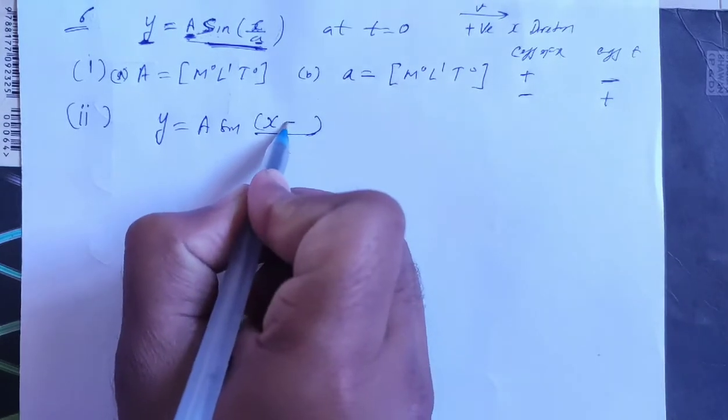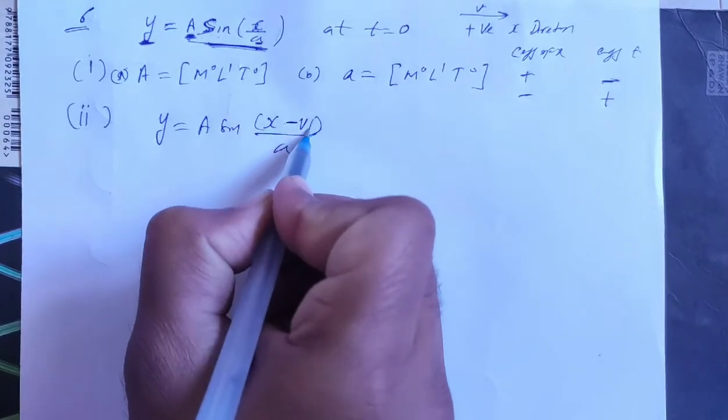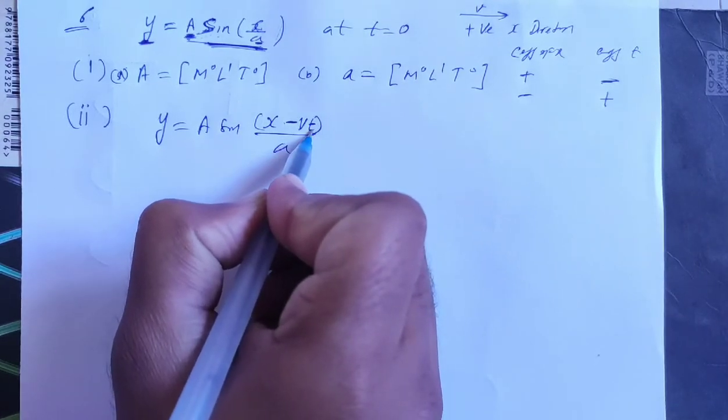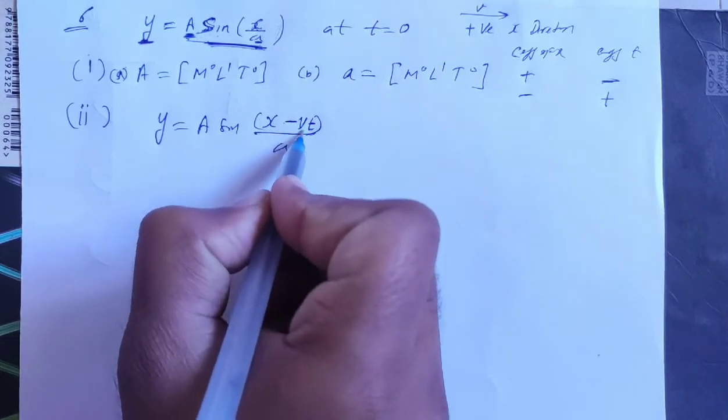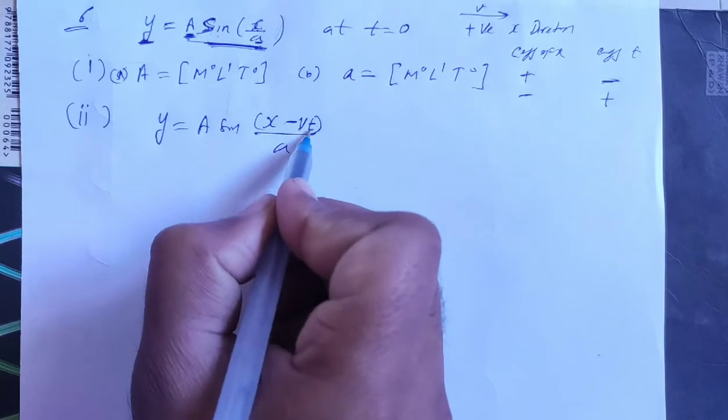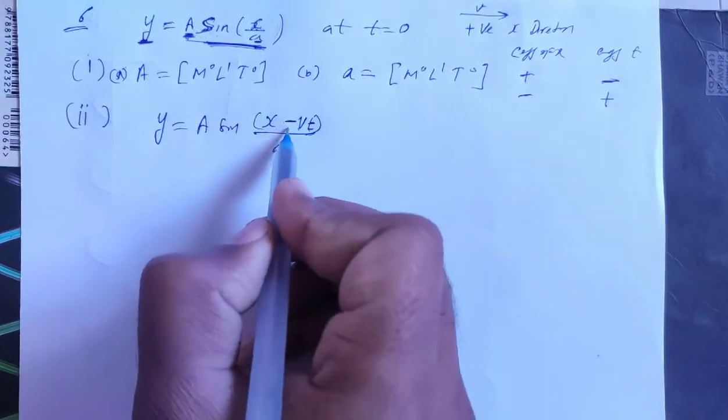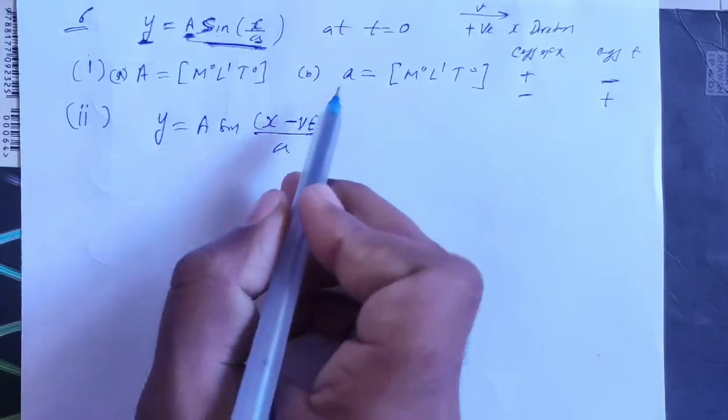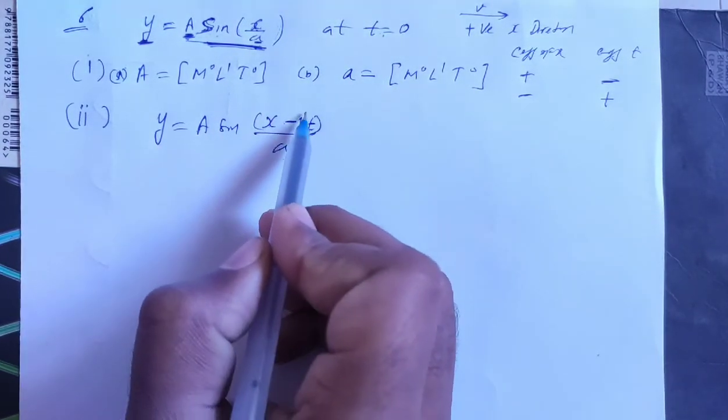Now I write this as v times t. So v into t - speed into time equals distance.